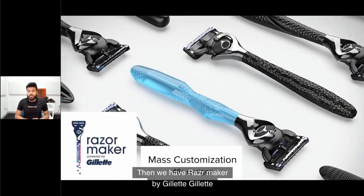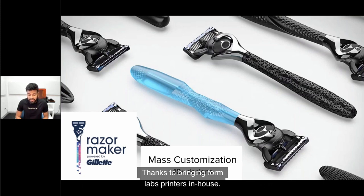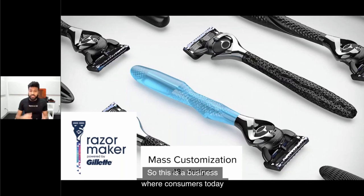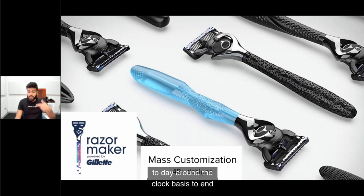Then we have Razormaker by Gillette. Gillette was able to launch an entirely new business model thanks to bringing Formlabs printers in-house. Consumers can go online and choose between 48 different designs and customize their handles with their names. The handles are 3D printed, and Gillette is using Formlabs machines around-the-clock to create these parts.